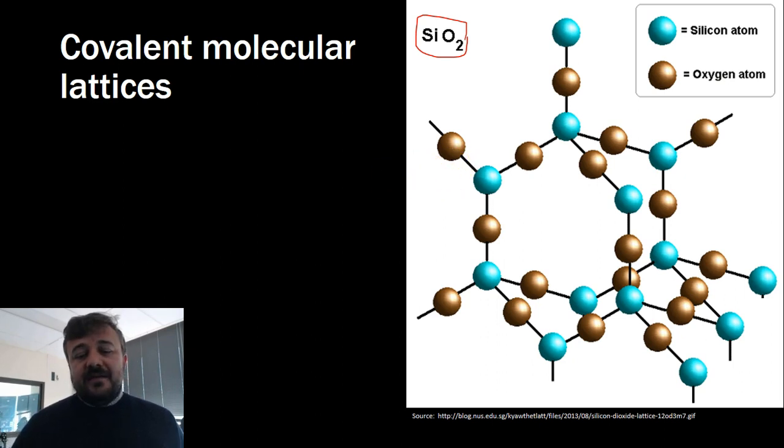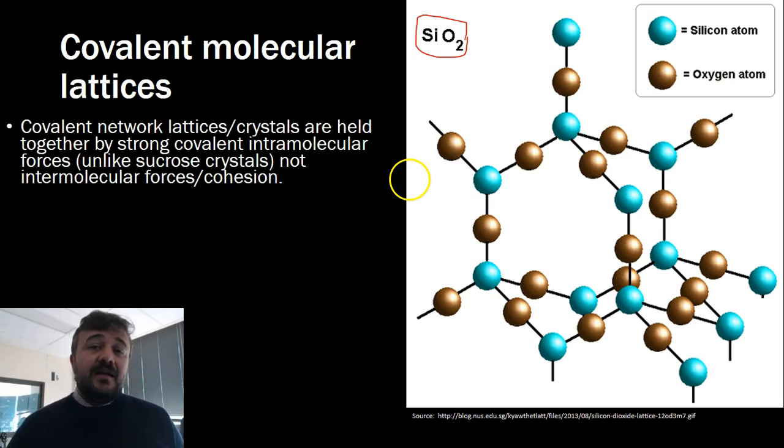What that means is, this whole thing, your whole grain of sand, that whole chunk of silicon dioxide is one molecule. A covalent network lattice crystal is actually held together by strong covalent intramolecular bonds. Unlike sugar crystals, which are held together by intermolecular bonds in between all the sucroses.